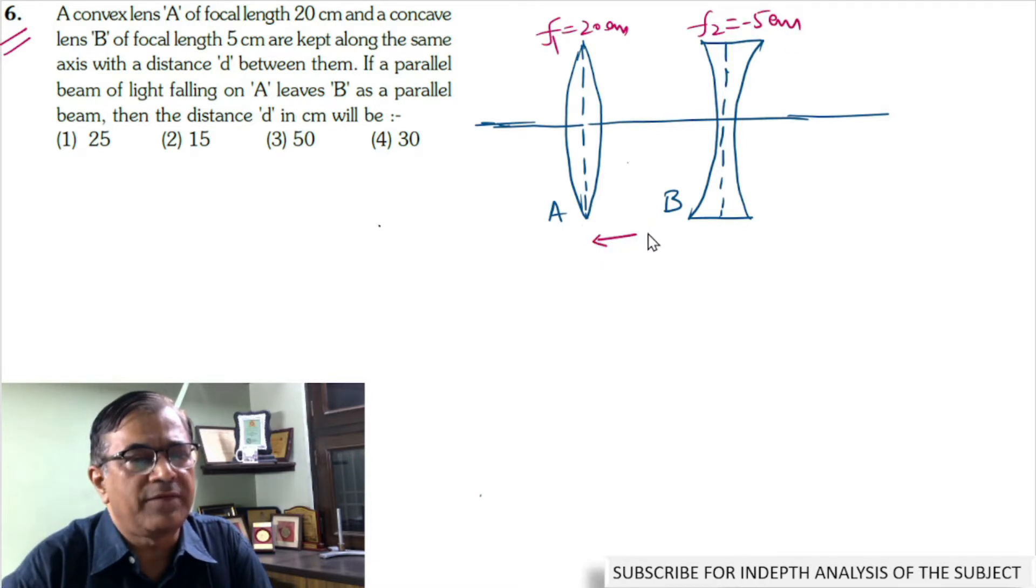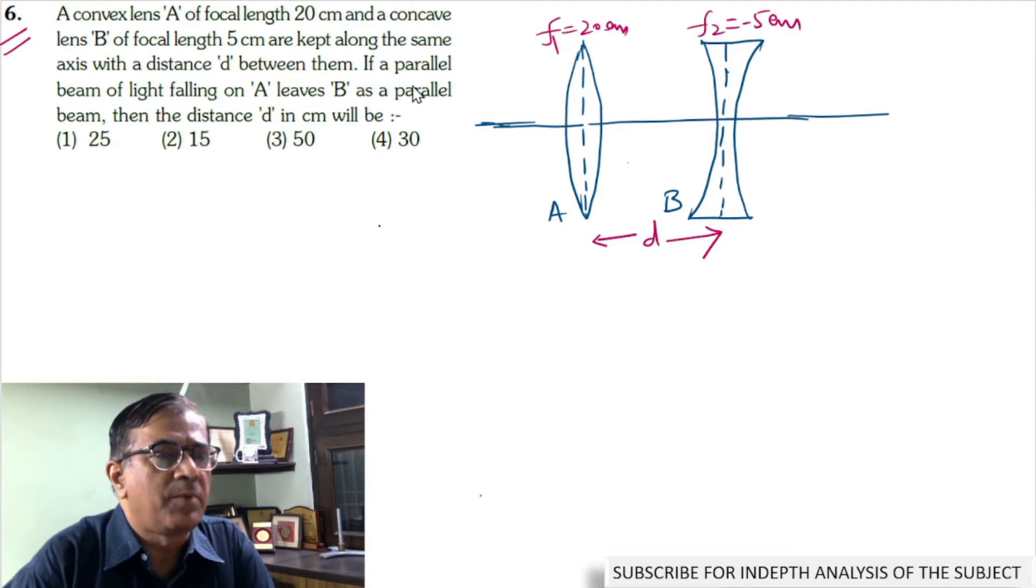The separation between the two lenses is D. Now as per the problem, a parallel beam of light that falls on A leaves B as a parallel beam. That is interesting.